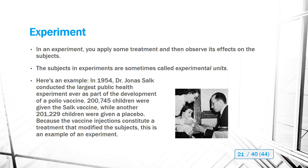An experiment is where you make some modification to your sample, usually with a control group and a treatment group, then observe the differences to see the effects of the treatment. A famous example is Dr. Jonas Salk's 1954 experiment — still the largest public health experiment ever — in which he gave over 200,000 children his polio vaccine and gave another group of similar size a placebo, essentially sugar water, comparing the treatment group and the control group.